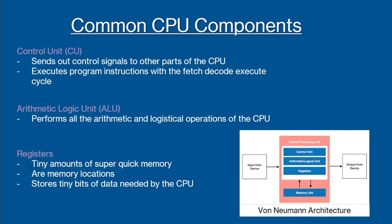Lastly, we have registers. These are tiny amounts of super quick memory and are memory locations. They store tiny bits of data needed by the CPU. Registers are really quick to read and write to, and there are many different types.